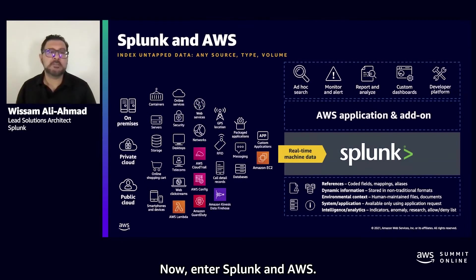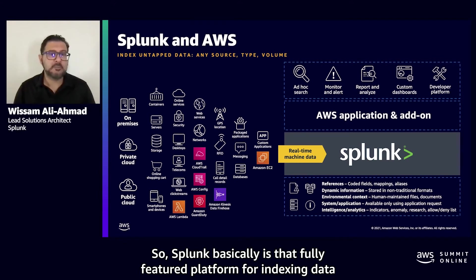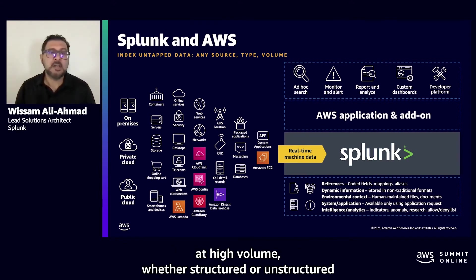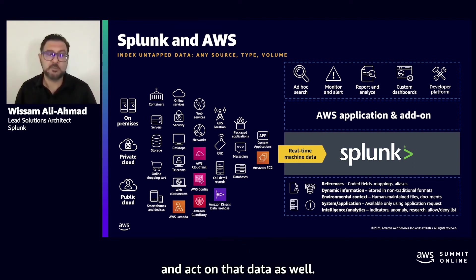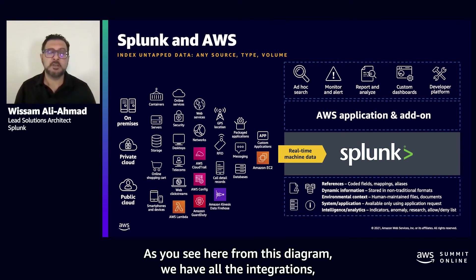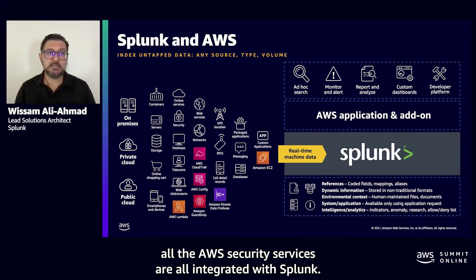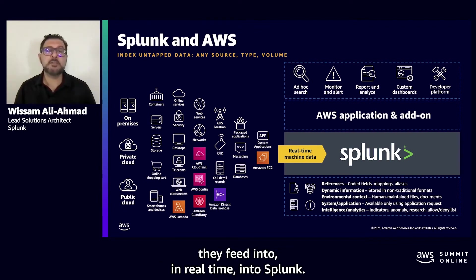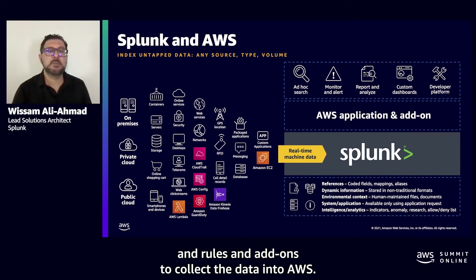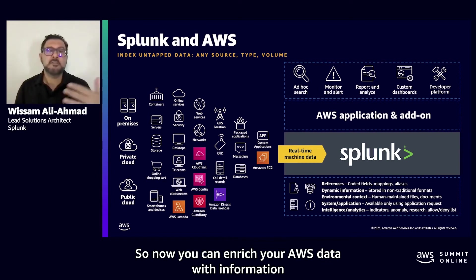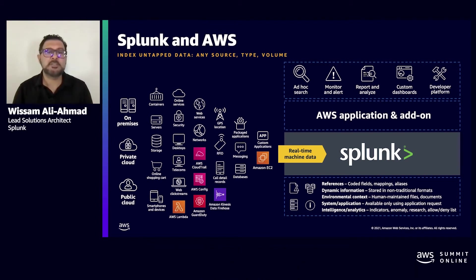Splunk is a fully featured platform for indexing data at high volume, whether structured or unstructured, and it gives you answers on that data — able to analyze, search, and act on that data as well. As you can see from this diagram, we have all the integrations. All the AWS security services are integrated with Splunk, and those data sources on the left feed in real time into Splunk. We have AWS-specific applications, searches, rules, and add-ons to collect that data. Now you can enrich your AWS data with information from your broader infrastructure, business applications, and databases with Splunk.